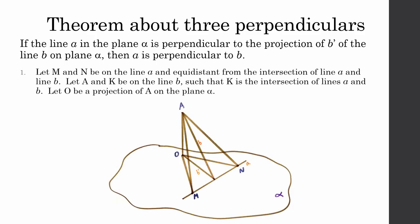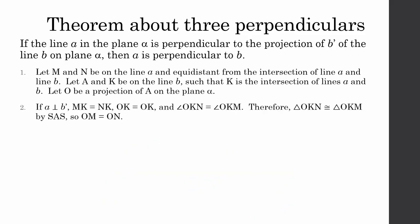To start, let M and N be on the line A and equidistant from the intersection of line A and line B. Next, let A and K be on line B such that K is the intersection of lines A and B. Finally, let O be a projection of A on the plane alpha. It's given that A is perpendicular to B'. This means that MK is equal to NK, OK equals OK, and angle OKN equals angle OKM. This means that triangle OKN is congruent to triangle OKM by side-angle-side, and therefore OM is equal to ON.